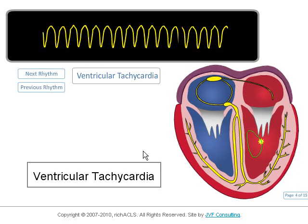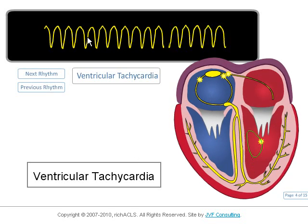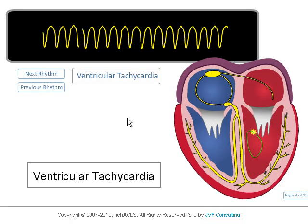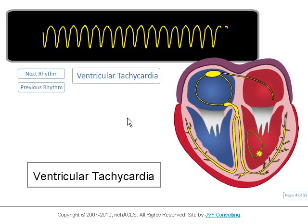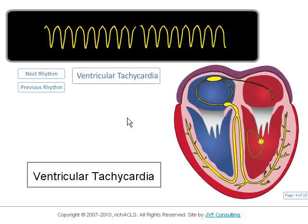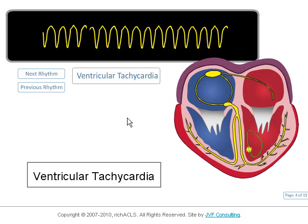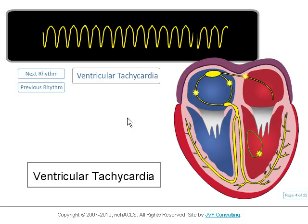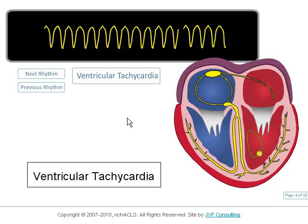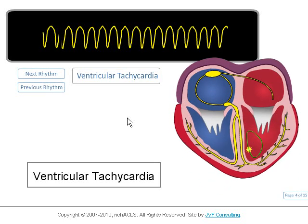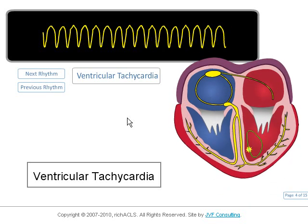A ventricular rhythm faster than 100 beats per minute is termed ventricular tachycardia. It's important to note that ventricular tachycardia can be relatively stable or unstable depending on the rate and condition of the heart. It's not uncommon for a patient to walk into the ER complaining of a fast heart rate, only to find them in ventricular tachycardia. Patients with sick hearts and fast heart rates in ventricular tachycardia can become unconscious from lack of cardiac output and require cardioversion.